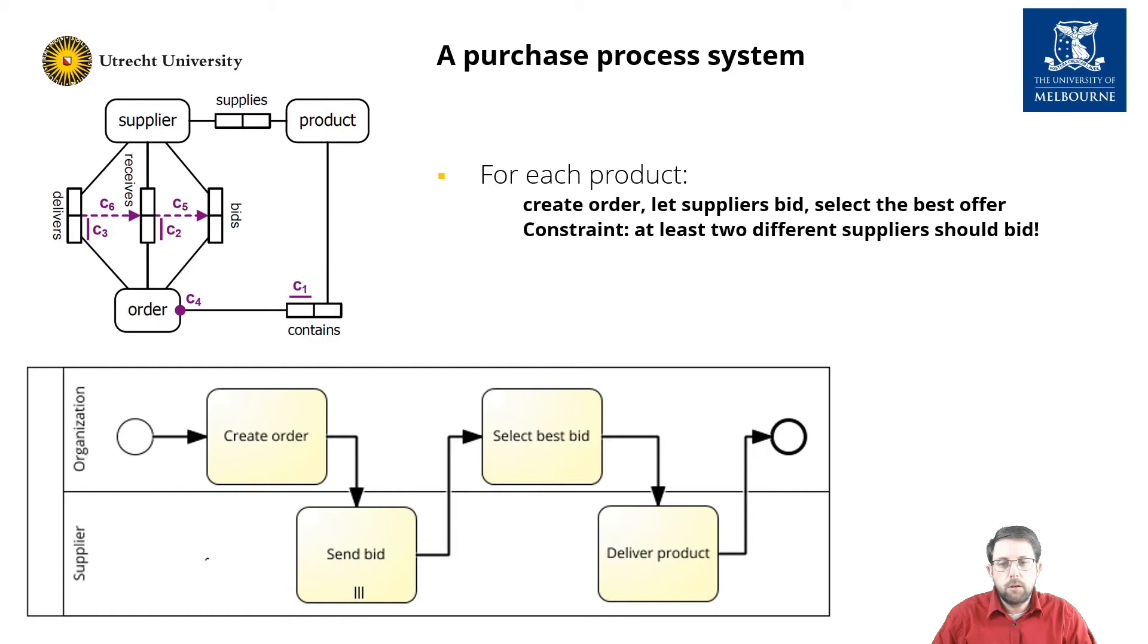Similarly, we can create an information model. The model in the top is an object role modeling notation and shows that each order contains exactly one product, that suppliers can bid on an order, and that only if a supplier bids on an order, it can receive the order and deliver it. The purple annotations depict the constraints in the model that can be captured in first order logic.